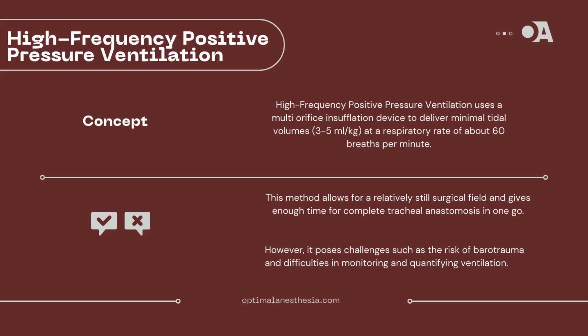Another technique is high-frequency positive pressure ventilation. This one uses a multi-orifice insufflation device. It delivers minimal tidal volumes of 3 to 5 milliliters per kilogram at a respiratory rate of around 60 breaths per minute. This method allows for a relatively still surgical field and gives enough time for complete tracheal anastomosis in one go. However, it comes with its own set of challenges, including the risk of barotrauma and the difficulty in monitoring and quantifying ventilation.